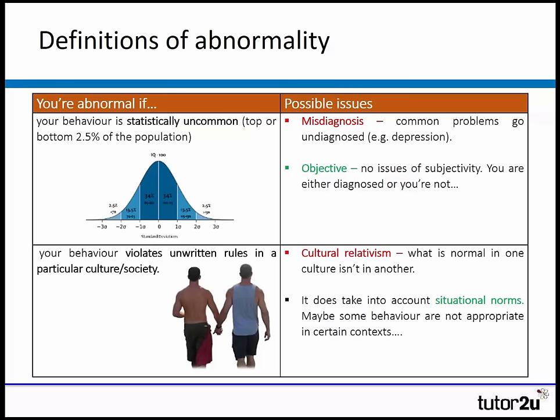A negative thing about this definition is something called cultural relativism. What is normal in one culture might not be normal in another, and therefore this definition can be abusive of human rights, because what is deemed normal in the UK — for example, homosexuality — might be seen as abnormal elsewhere, and just because it violates the rules of that society, people might deem it as abnormal behaviour.